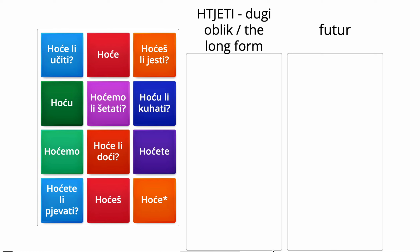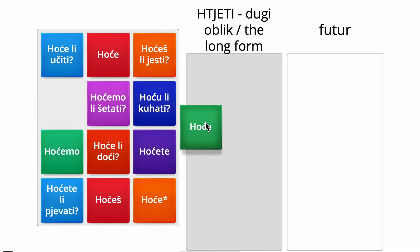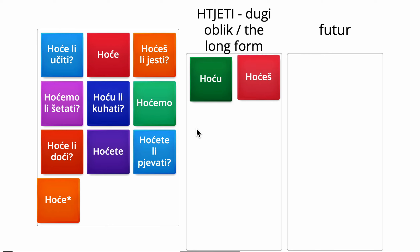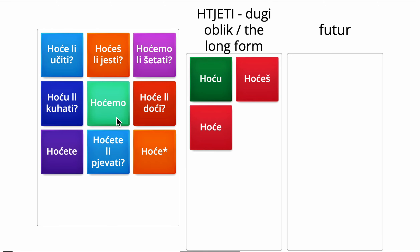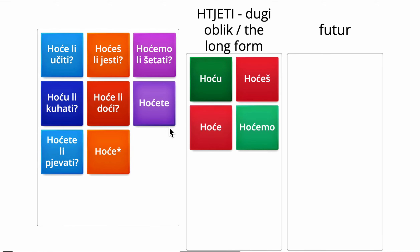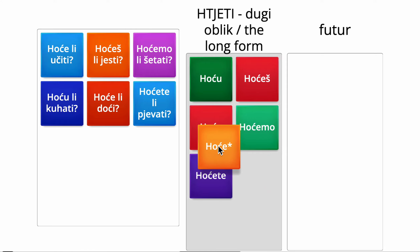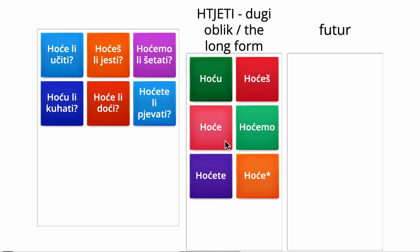There is the long form of the verb htjeti. We make the long form by adding 'ho' before the short form. So, ču becomes hoću, then hočeš, hoče. And then plural: hočemo, hočete. And the third person plural: hoče. Remember that the third person plural and singular have exactly the same form.